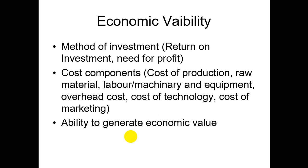Under economic viability, the first consideration is the method of investment — how we are going to invest in the business. For this, we use ratios such as return on investment (ROI) and the need for profit. We must calculate ROI and profitability requirements. The second consideration is cost components.